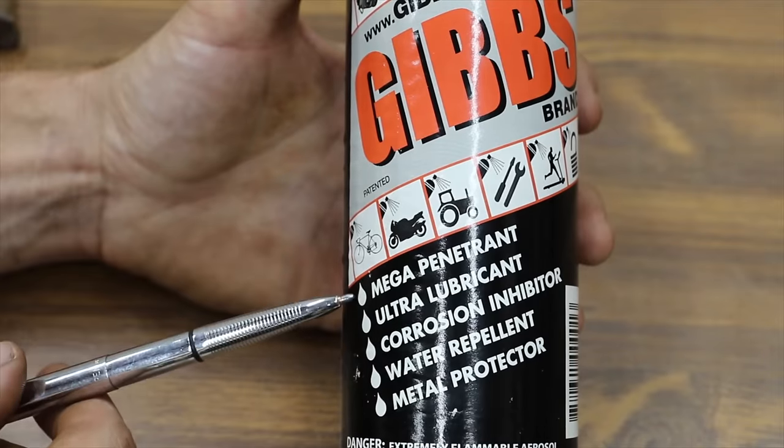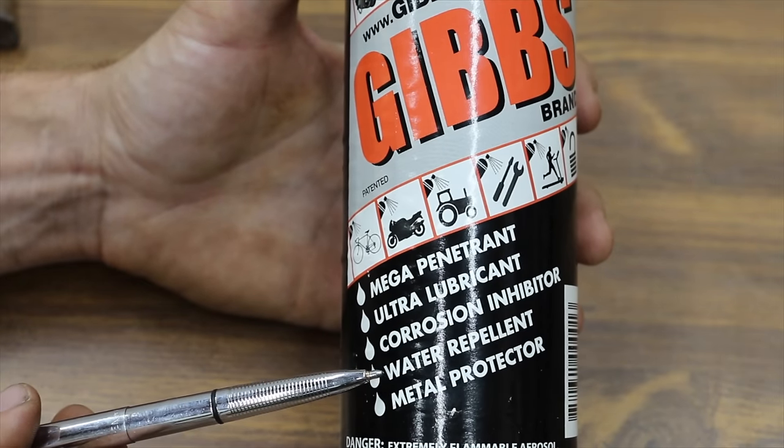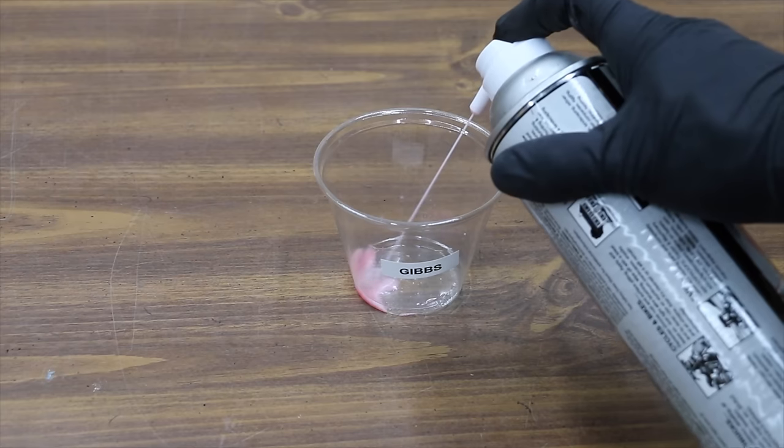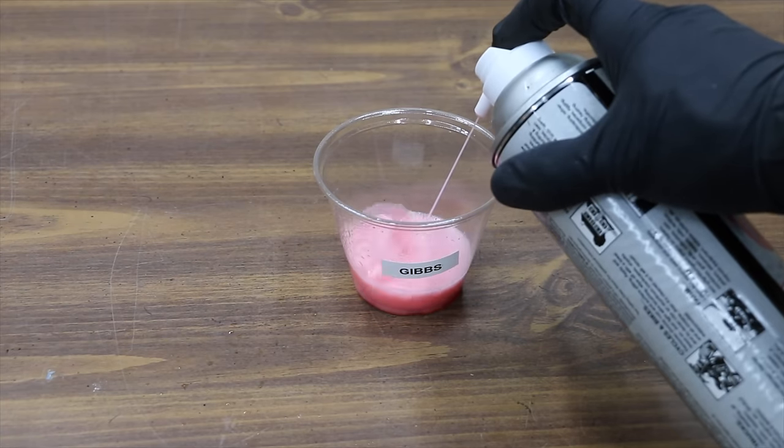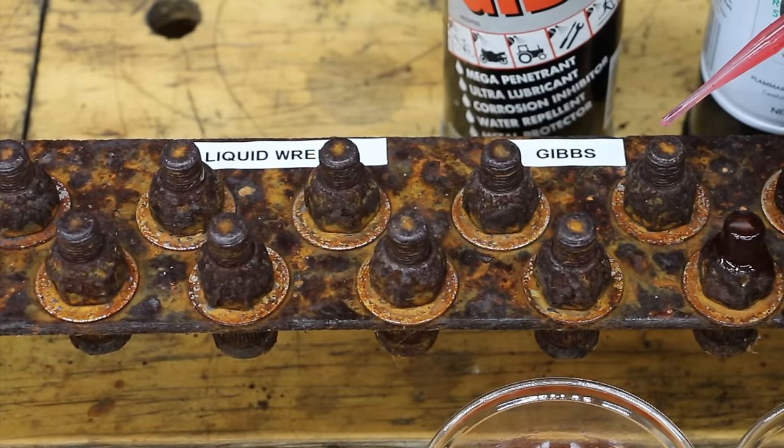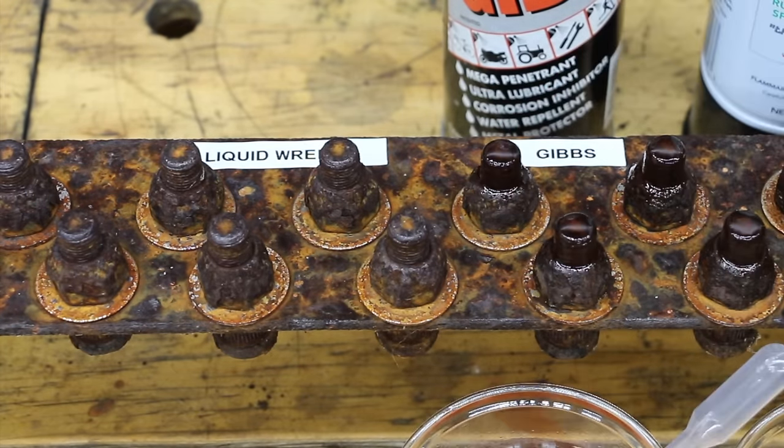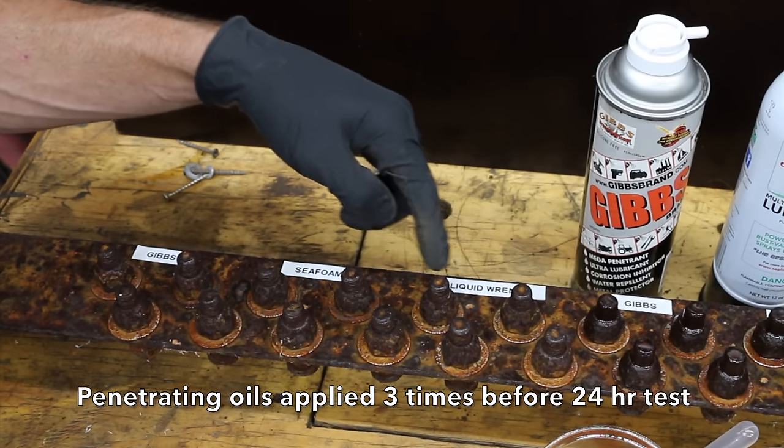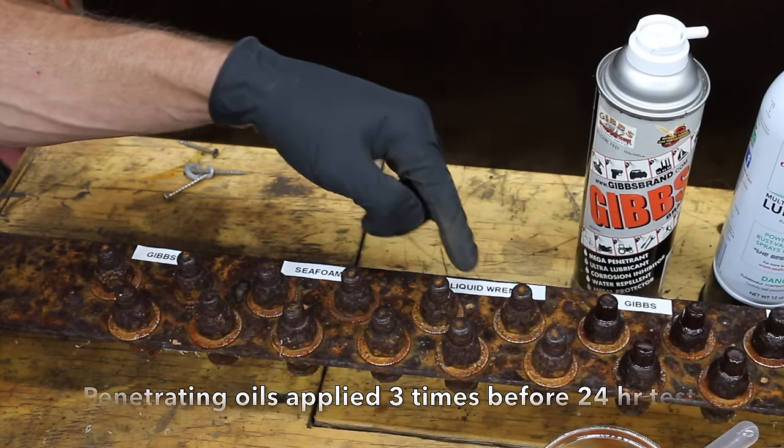Gibbs is a mega penetrant, ultra lubricant, corrosion inhibitor, water repellent, and metal protector. We're going to go ahead and apply the penetrating oil to the next set of bolts. We'll come back in 24 hours to test these.